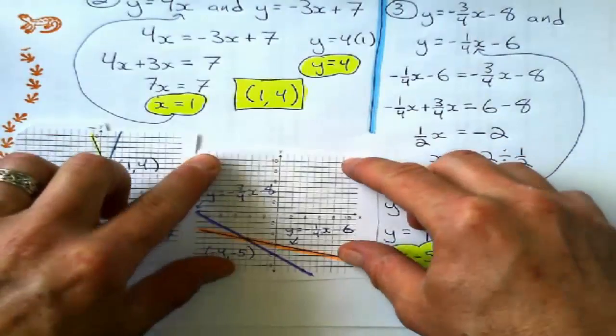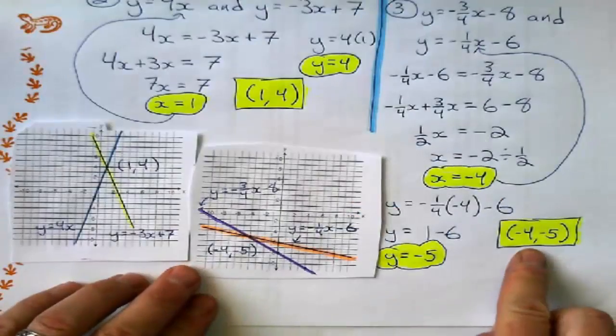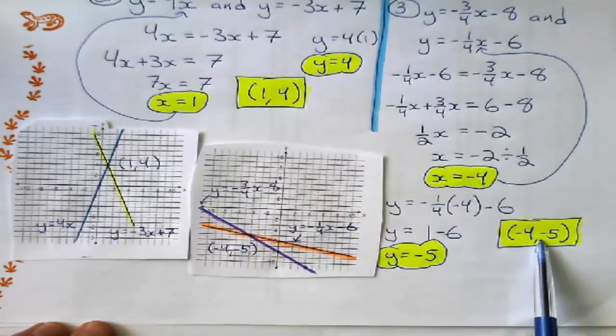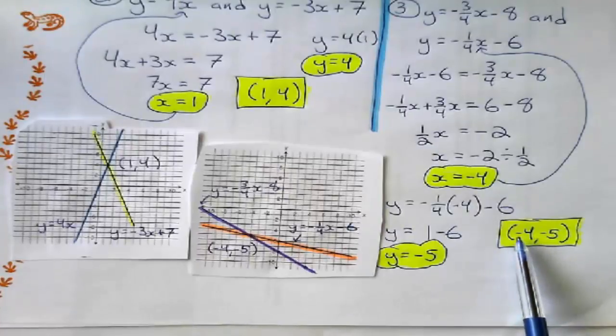What about that guy? I've got my two lines here. And on that last example, that's my point of intersection, negative 4, negative 5. Of course.